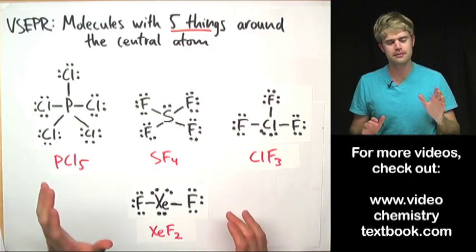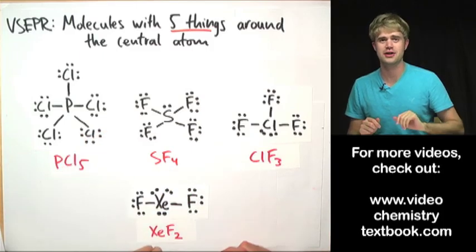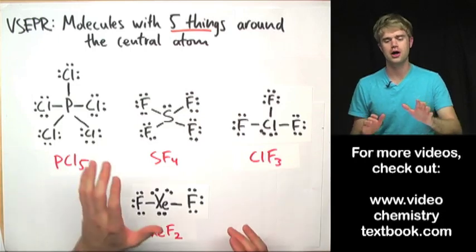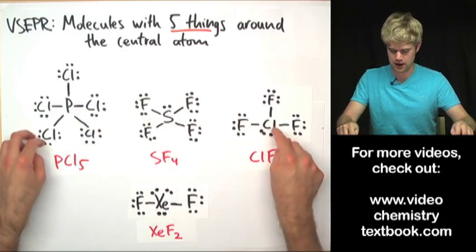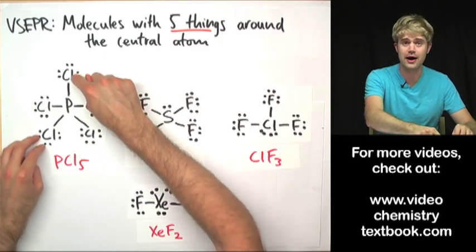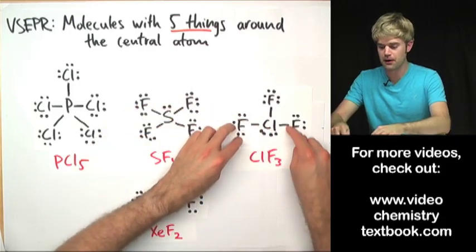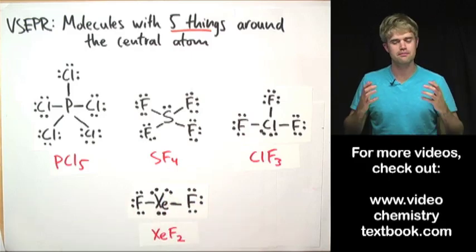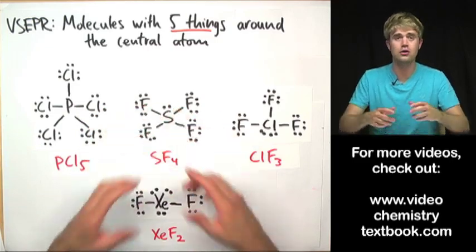In this video, we're going to look at the three-dimensional VSEPR shape for molecules with five things around the central atom. These five things can either be five bonds to other atoms, or four bonds and one lone electron pair, or three bonds and two lone electron pairs, or two bonds and three lone electron pairs. The point is these five things can be any combination of bonds to atoms or lone electron pairs.